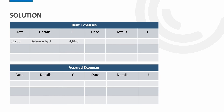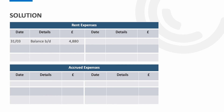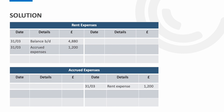Starting with a rent expense balance of £4,880 and nil on accrued expenses, we record the accrual by debiting rent expense by £1,200 — increasing the expense account — and crediting the accrued expense account, increasing the business's liabilities. To close off at year end we transfer the rent expense balance to profit or loss: £4,880 plus the £1,200 accrual equals £6,080. We then balance off the accrued expense account, carrying the balance down to be brought down in the new financial year.